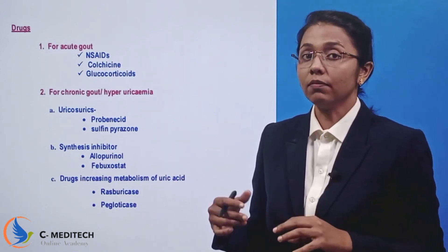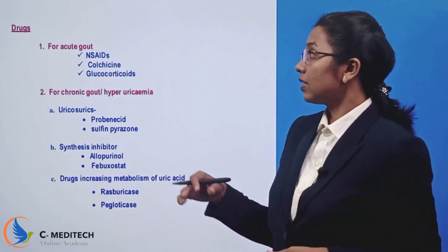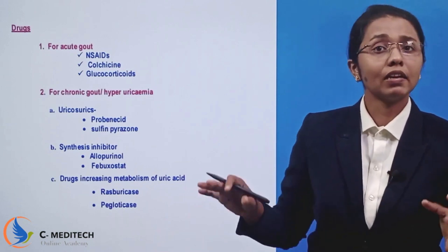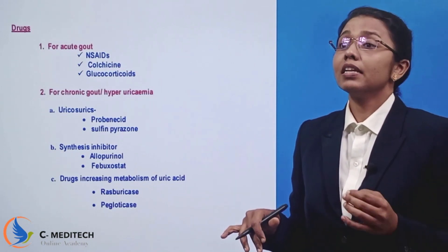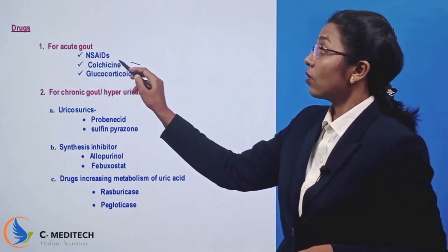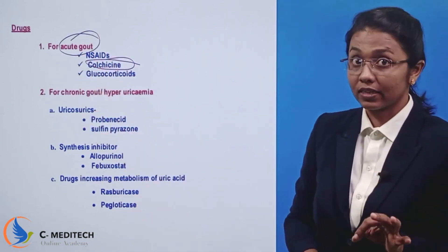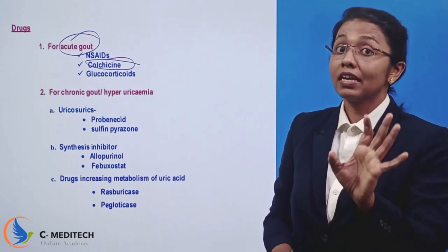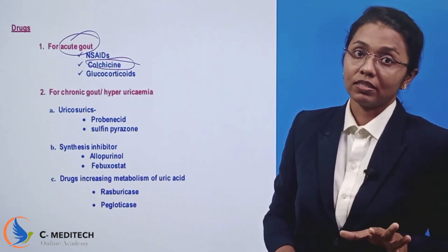That is acute gout. For acute gout, we usually take NSAIDs. You can also take corticosteroids. Colchicine is used for acute gout — that is an important MCQ point. Colchicine for acute gout, and also corticosteroids.